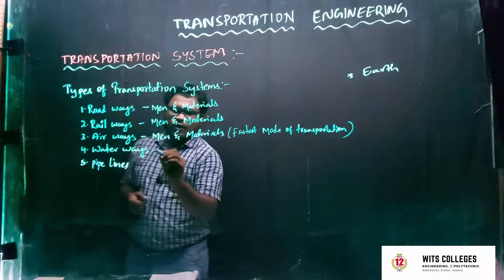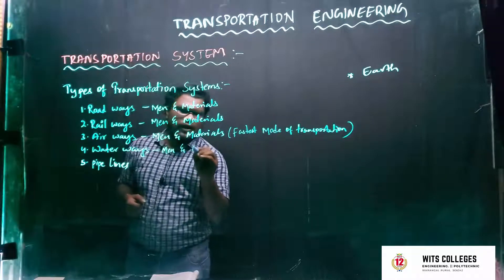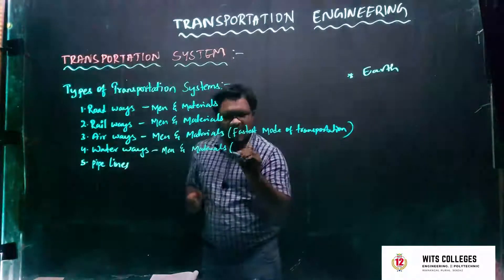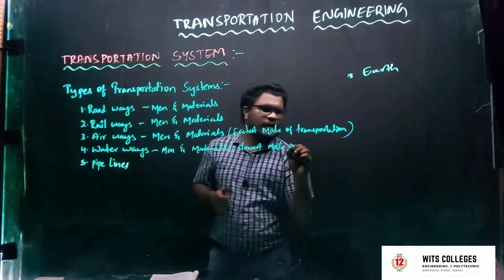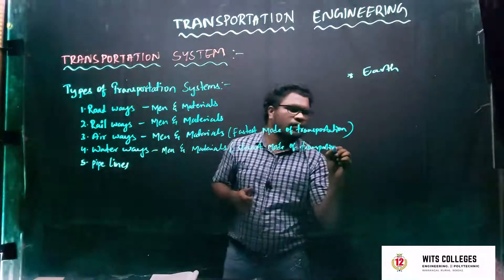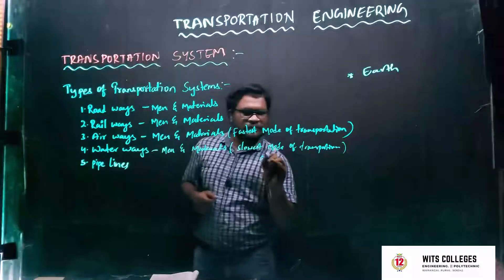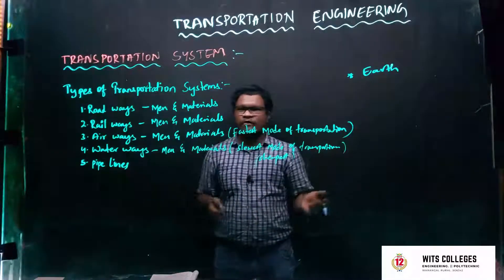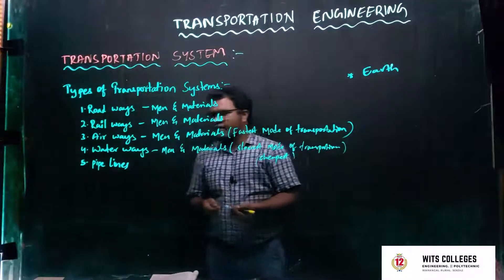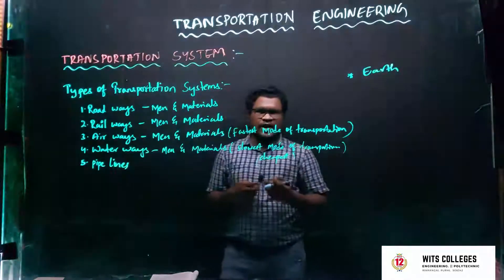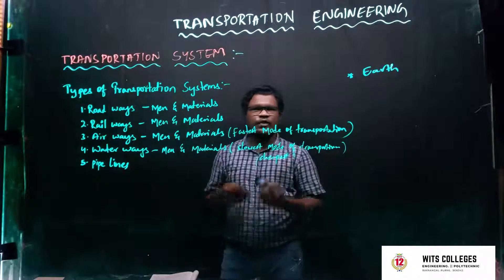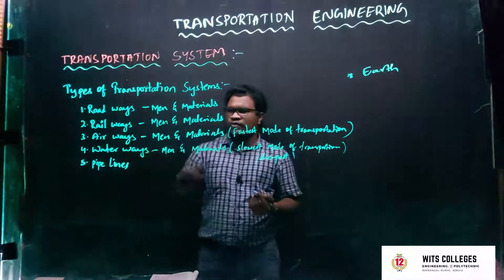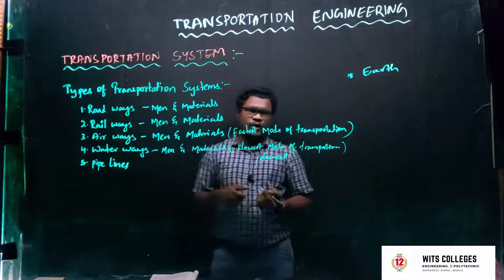Another mode of transportation system is waterways. In waterways, we can transfer men and materials. This is the slowest mode of transportation but it is the cheapest mode of transportation system. By waterways, we can transfer a large number of men and large quantities of material from one place to another place, though it takes time. We can transport from one country to another country, from one continent to another continent, using rivers and natural harbors.